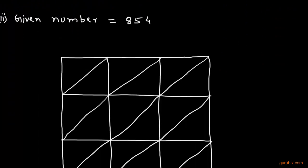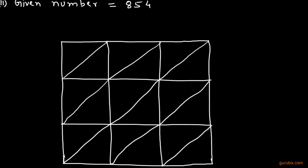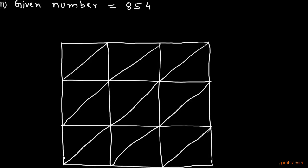This is how we can find the square of any two-digit number using the diagonal method. Let us now move to the second part of the question, where we are given the number 854. We shall draw a square and make nine equal parts.